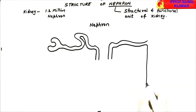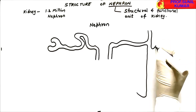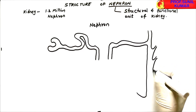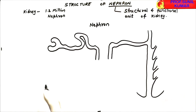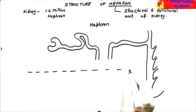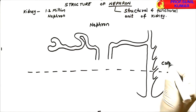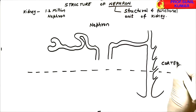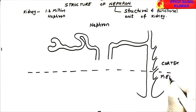The tubule we are now drawing is the collecting tubule, which finally enters the medulla of the kidney. We divide the diagram with one line — this line indicates that half of the nephron is in the cortex of the kidney and the remaining part is in the medulla of the kidney.